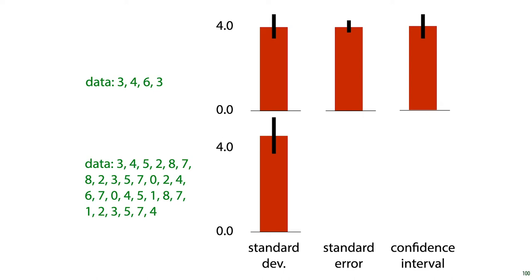The standard error, however, is a measure of how precise our estimate of the mean is. We estimated the mean to be 4, and that estimate is now much more precise, because we have more data, therefore the standard error decreases. And the same holds for the confidence interval. It's an estimate of how precise our error bar is, so if we see more data, the confidence interval and the standard error decrease, whereas the standard deviation stays broadly the same size.